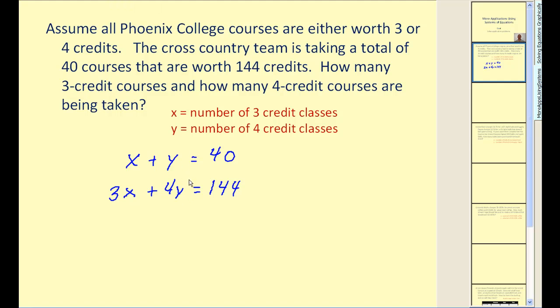Now remember we can solve this system using a variety of methods. I'm going to use the elimination method and I'm going to eliminate the x terms. So since this is 3x, I want this to be a negative 3x. Therefore I'll multiply this first equation by negative 3. So the result would be negative 3x minus 3y is equal to negative 120. And we can leave the second equation in its original form. And the reason we did this is now since the x terms are opposites, these will add to 0. This will add to a y or a 1y. And this will add to 24. So y equals 24.